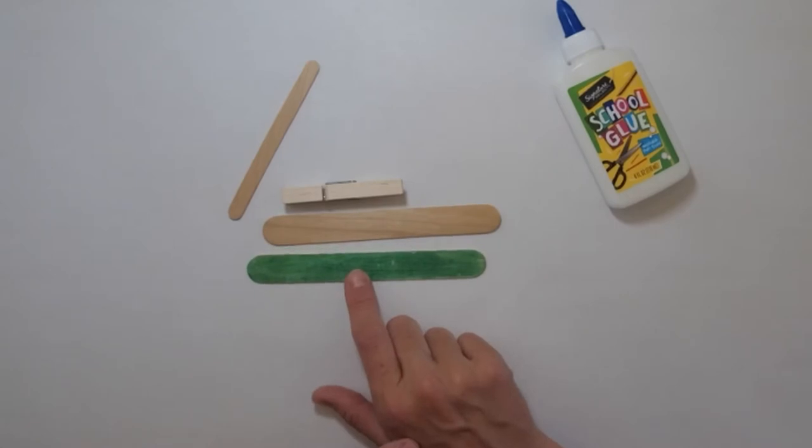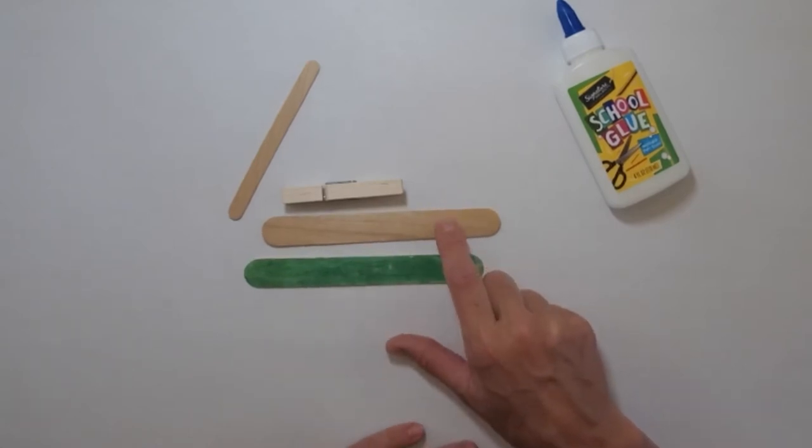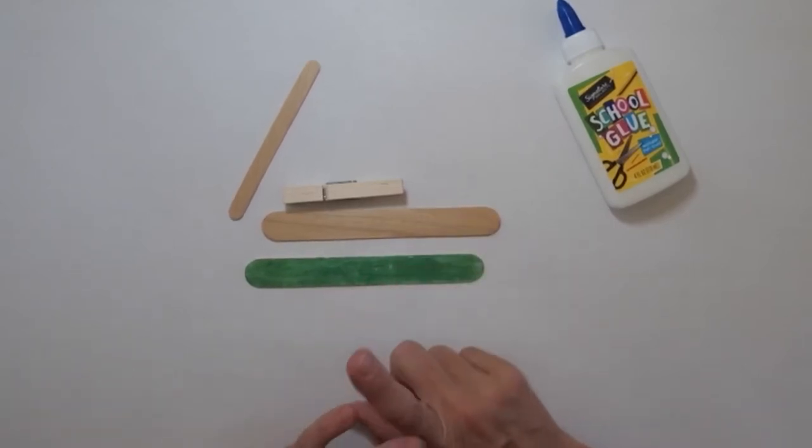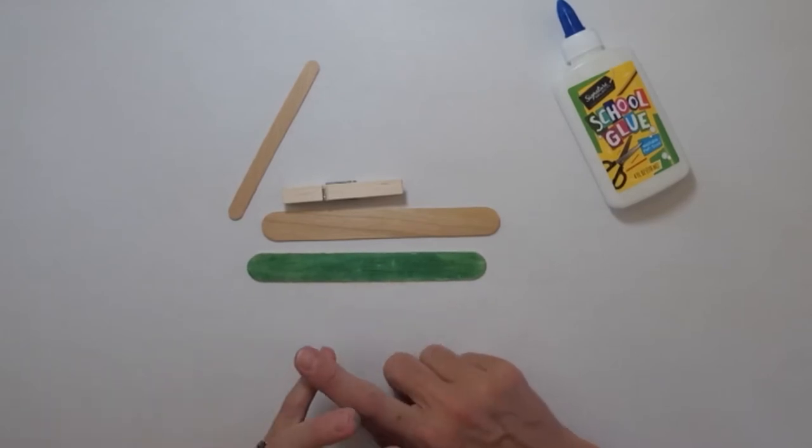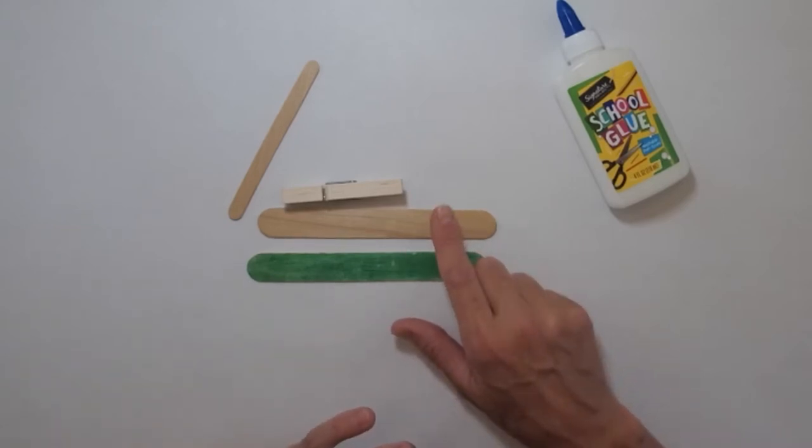Your kit may have come with some colored sticks or maybe just plain wood sticks. If you want to color your plane I would do that before you glue it down. I just used a marker to color this one. You can use paint, you can use crayon, you can even use colored pencil. These wood sticks color really easily.